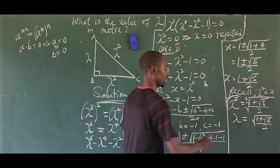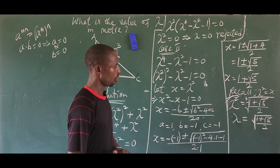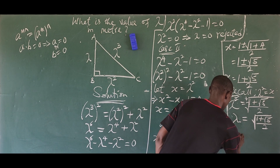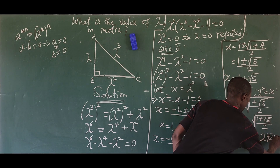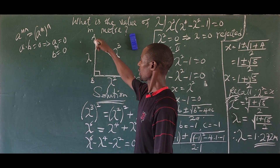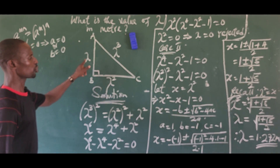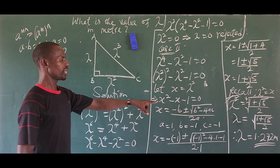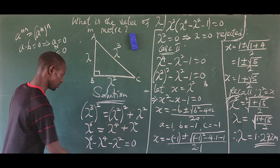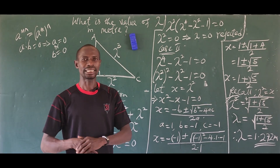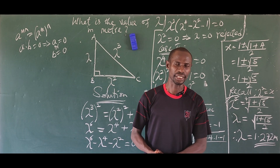Entering this into a calculator gives approximately 1.272. So lambda is approximately equal to 1.272 meters. That is the value of lambda satisfying the given expressions. The side AB equals 1.272 m, AC equals 1.272 cubed, and BC equals 1.272 squared. This brings us to the end of today's math class — thank you for watching, see you next class.